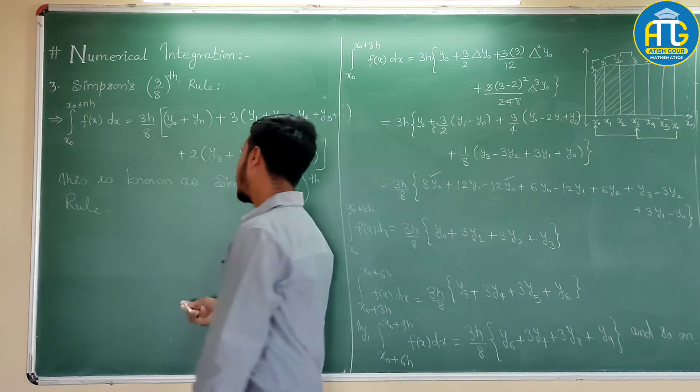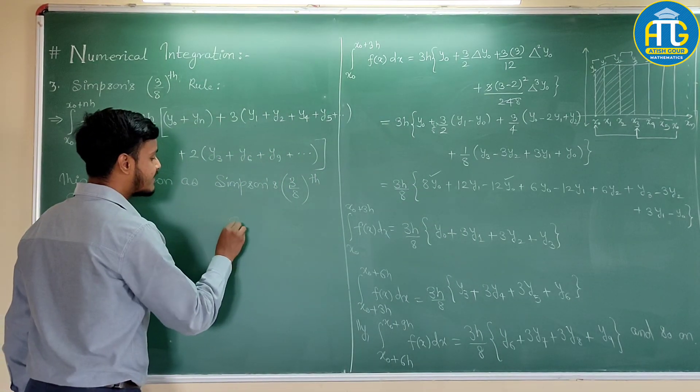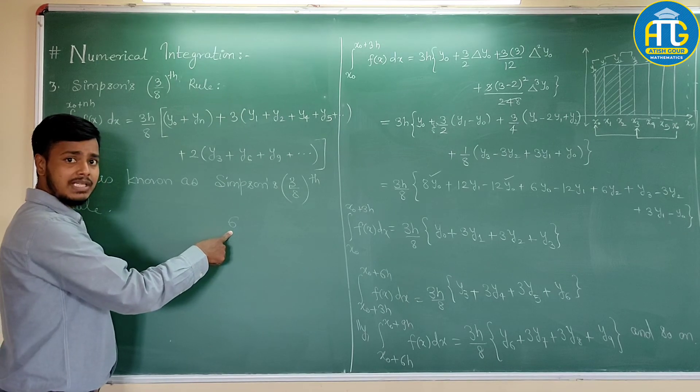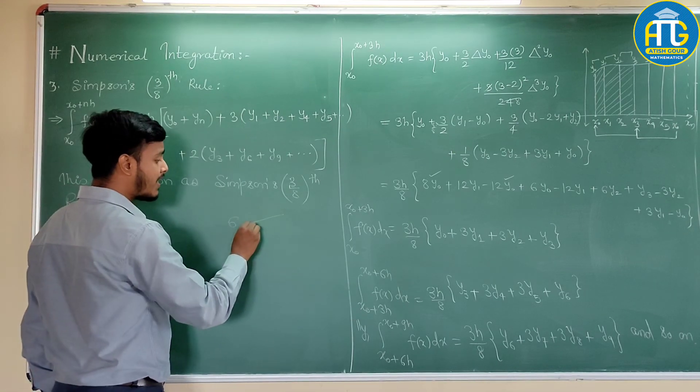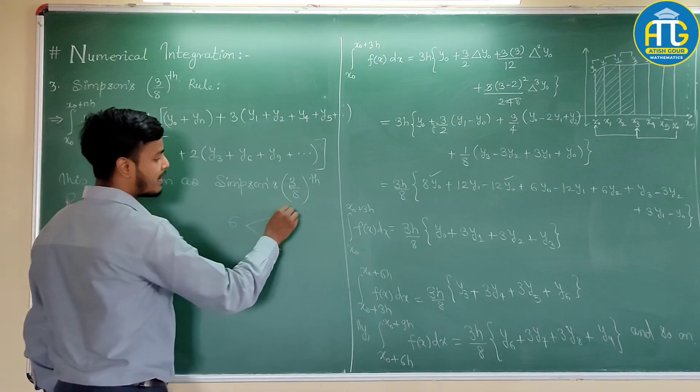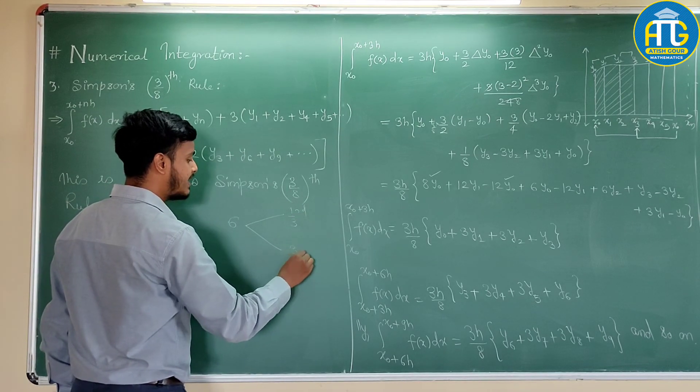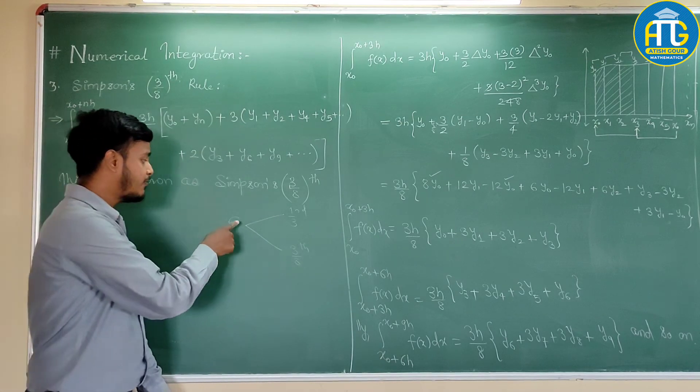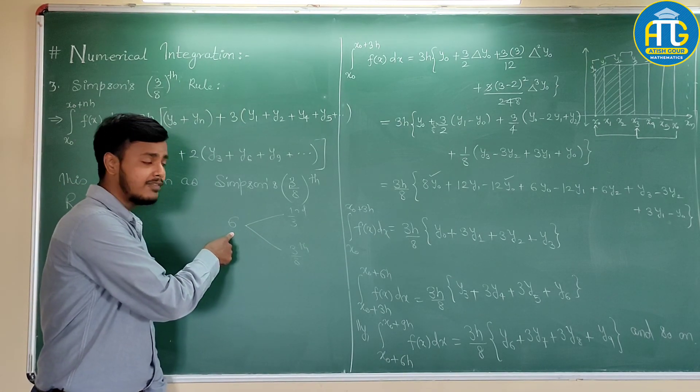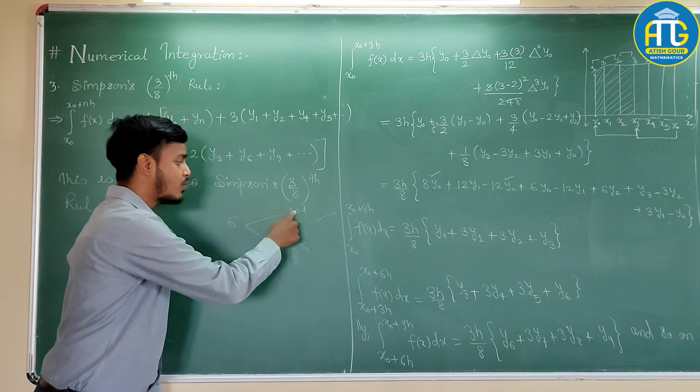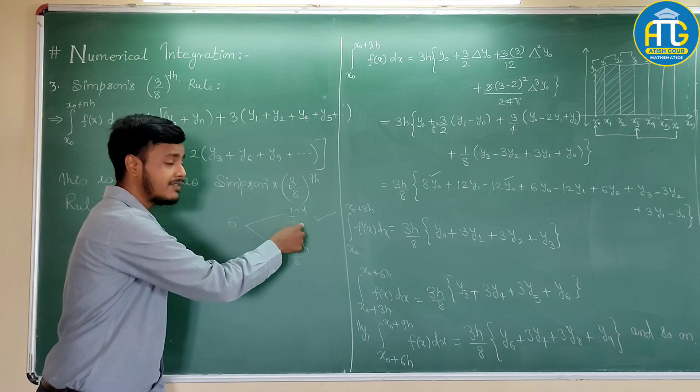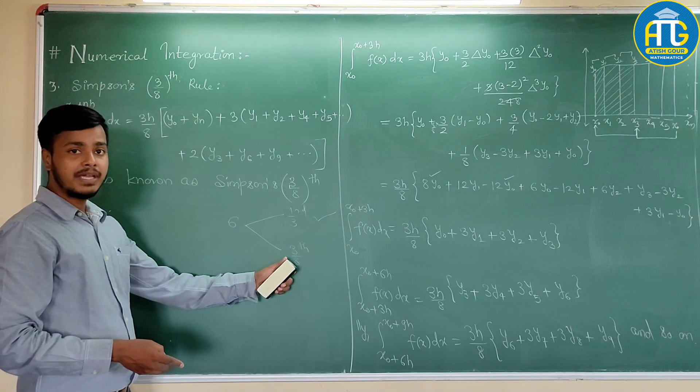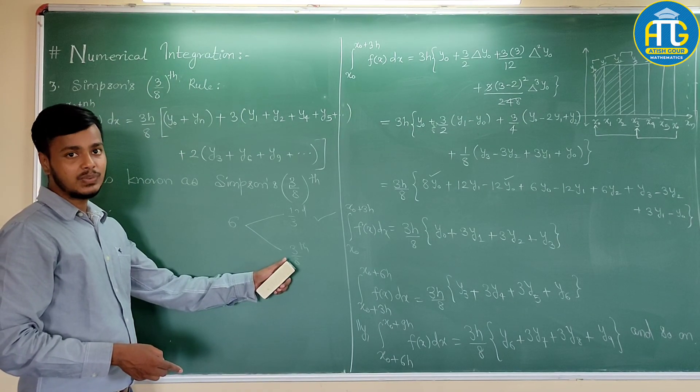Now, you may be having like, sir, we have 6. 6 is even as well as 6 is a multiple of 3. Then, which one to apply? So, you can apply one-third as well as three-eighth rule. But, if you have number of intervals even, you always go for one-third rule because this will give you more approximate answer in comparison to three-eighth rule.